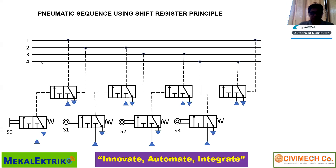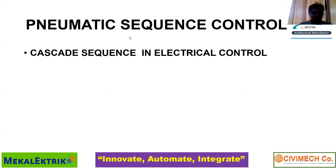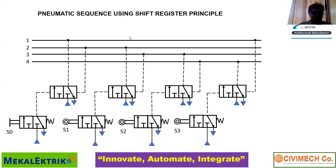So I have 1, 2, 3, 4 lines here and each line should be filled with air one at a time. After every press of S0, if I press S0, the line will go to 1. After I press S1, the line will go to 2. As I press S2, the line will go to 3. And if I press S3, the line will go to 4.